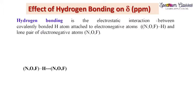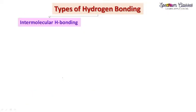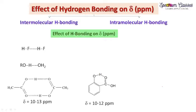Before discussing the effect of hydrogen bonding, let's have a brief overview. Hydrogen bonding is an electrostatic interaction between a covalently bonded hydrogen atom attached to electronegative atoms. The hydrogen atom which shows hydrogen bonding is covalently bonded with highly electronegative elements — that is nitrogen, oxygen, or fluorine — and has electrostatic interaction with the lone pair present on those electronegative elements. Hydrogen bonding is of two types: intermolecular and intramolecular.